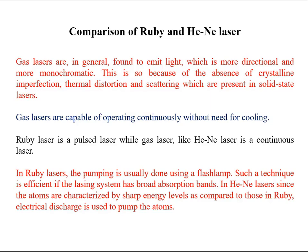In ruby laser, pumping is usually done using a flash lamp. Such a technique is efficient if the laser system has broad absorption bands, as in the ruby crystal. In the helium-neon laser, since atoms are characterized by sharp energy levels, electrical discharge is used to pump the atoms. Finally, gas lasers are easier to make than solid state lasers because the process of a four-level laser is easier than that of a three-level laser. In this topic of lasers, you have learned about the properties, procedure, types, and examples of lasers, including examples of solid state laser and gas laser.